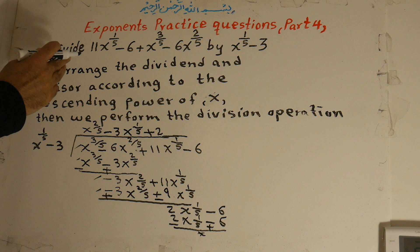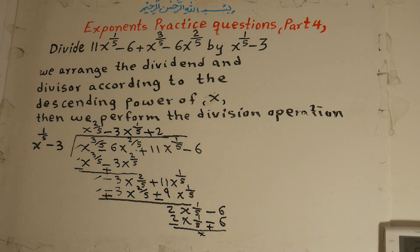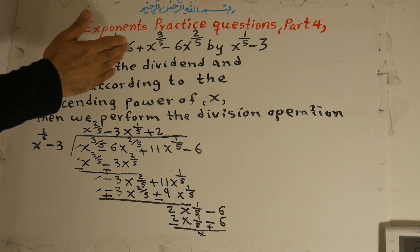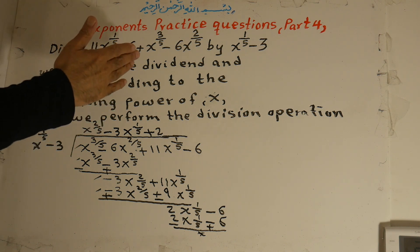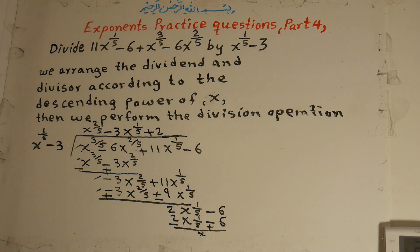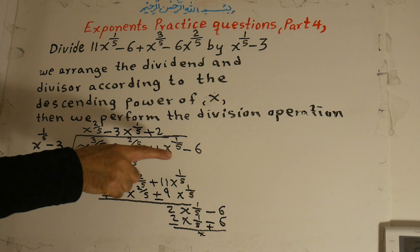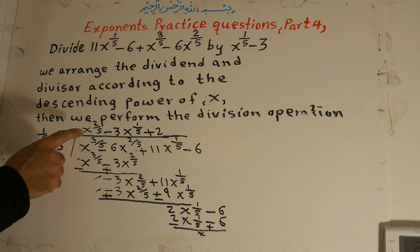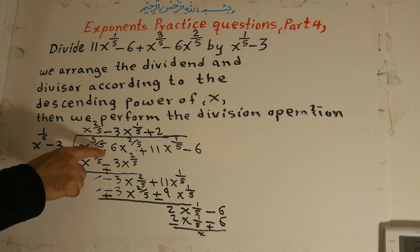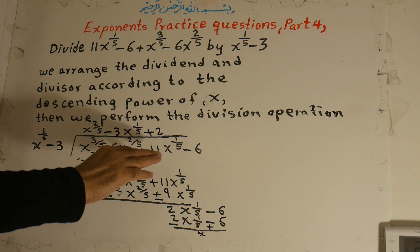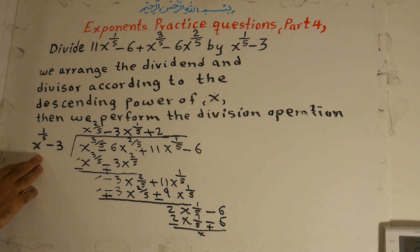You divide 11x to the power of 1 over 5 minus 6 plus x to the power of 2 over 5 minus 6x to the power of 2 over 5 by x to the power of 1 over 5. First we arrange the dividend and the divisor according to the descending power of x, meaning from larger to smaller. So the arranged form is x to the power of 3 over 5 minus 6x to the power of 2 over 5 plus 11x to the power of 1 over 5 minus 6, divided by x to the power of 1 over 5 minus 3.